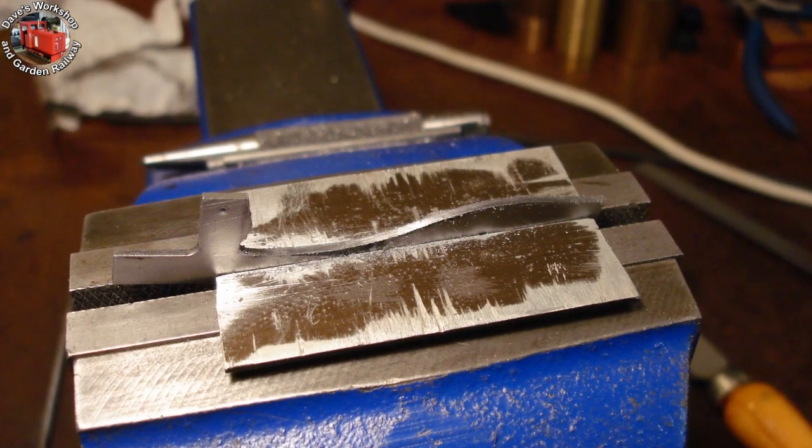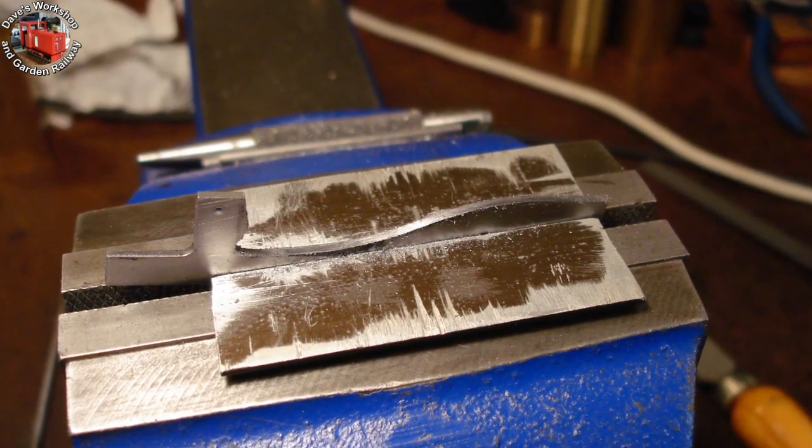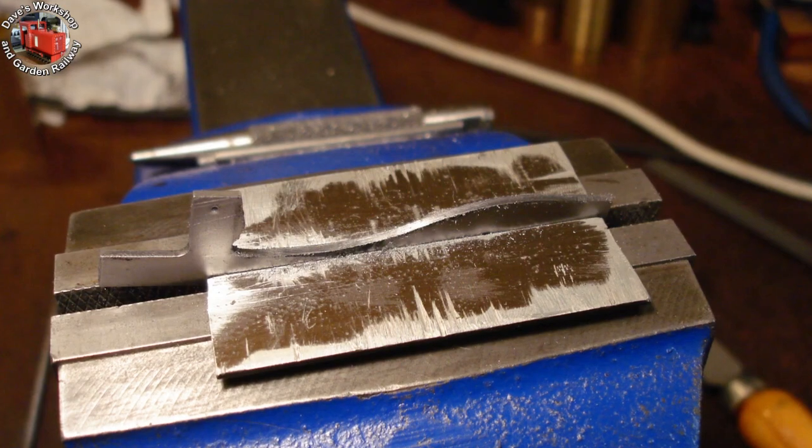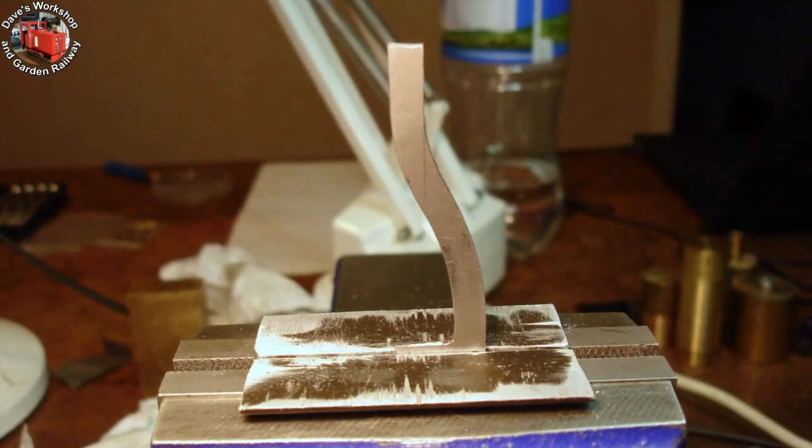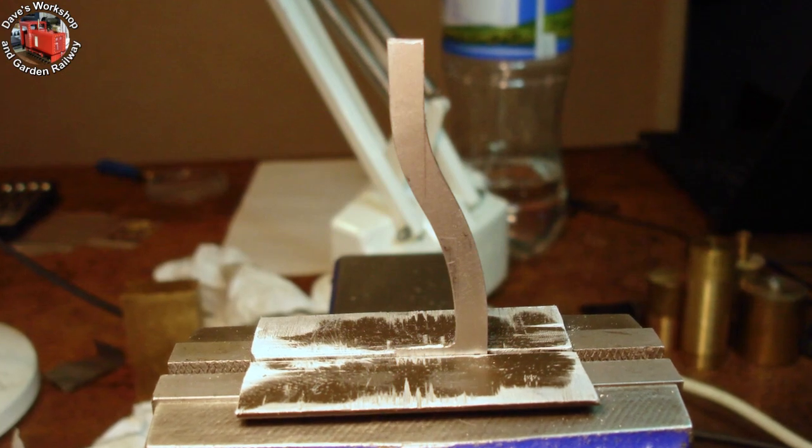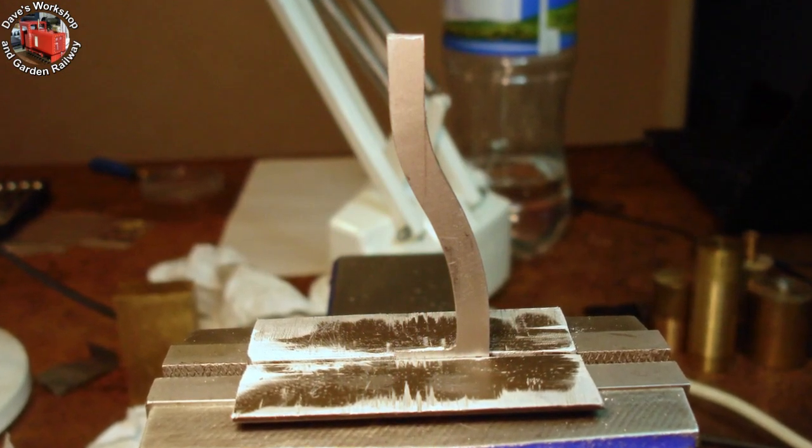I've been working on new, more cosmetically appealing extension rods. Two this time, for both cylinders. Using the original, I measured with drill shanks, how far away from the square cut out the axle was.